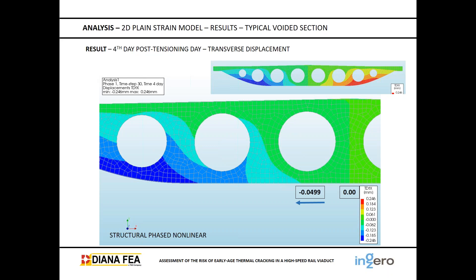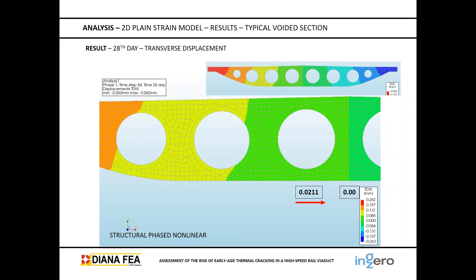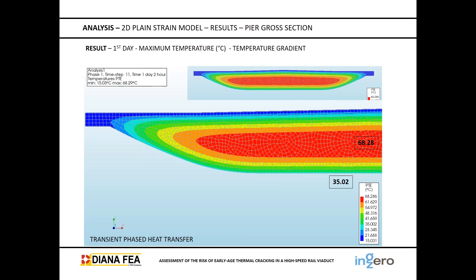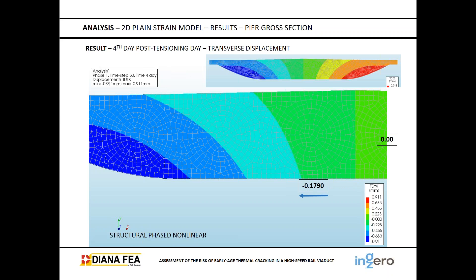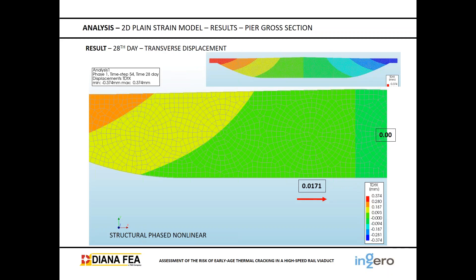Looking at the transverse displacement, from the fourth day we see that under the void it has moved by a very small amount in millimeters — we'll compare this with the gross section shortly. By the 20th day, the transverse direction is not expanding but compressing. Looking at the other section — the gross section over the piers — the temperature gradient shows the inner core at 68 degrees and the outer part at 35 degrees. The transverse displacement also expands on the fourth day and contracts by the 28th day.